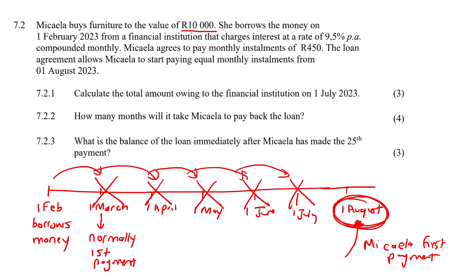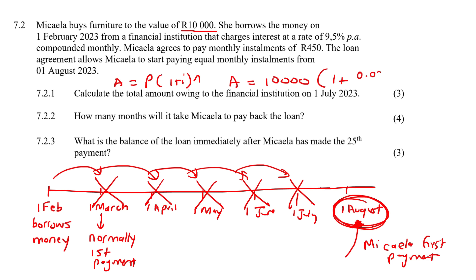She's going to log into her ABSA or FNB account and see that the loan amount is no longer 10,000 Rand — maybe it's now going to be 10,600, for example — because she hasn't started paying, but the bank's not going to wait for you. They're going to start adding on that interest. So the first question asks us to calculate the total amount she owes. Obviously it's not 10,000 Rand anymore.